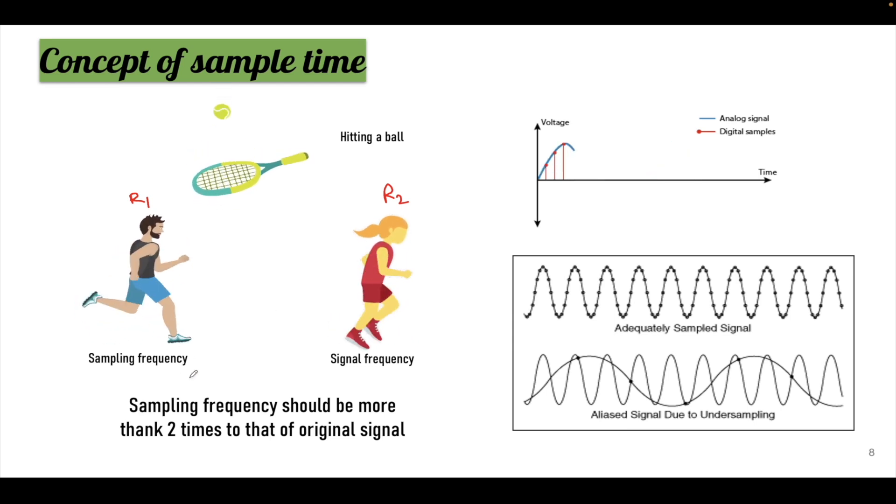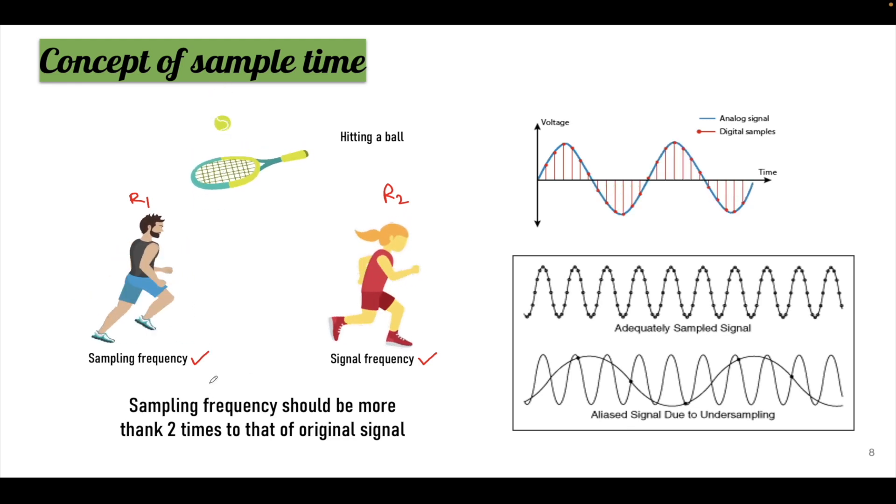So consider runner one as the sampling frequency and runner two as the signal frequency. In such a case the sampling frequency should be faster than the signal frequency. So how much greater should the sampling frequency be than the signal frequency? That is described in the Nyquist criterion.